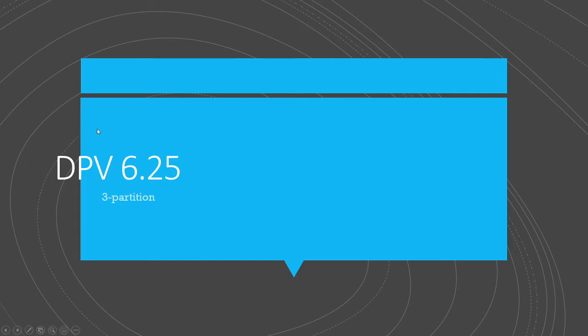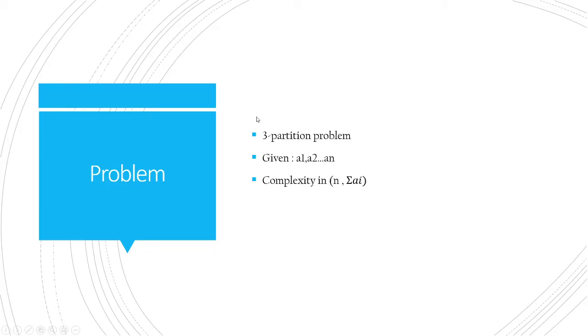So let's quickly look at the problem. Three partition: given n numbers a1, a2, to an, you have to break these into three sections such that each one will sum to a third of the total sum, and you have to do it in such a way the complexity is a polynomial function of n and sigma ai.